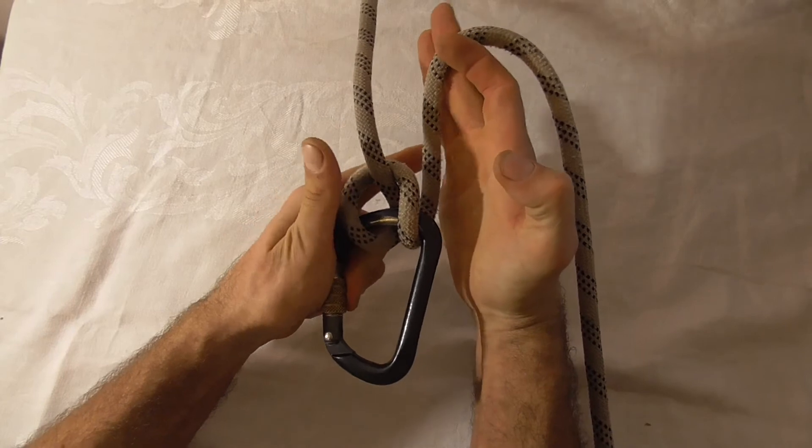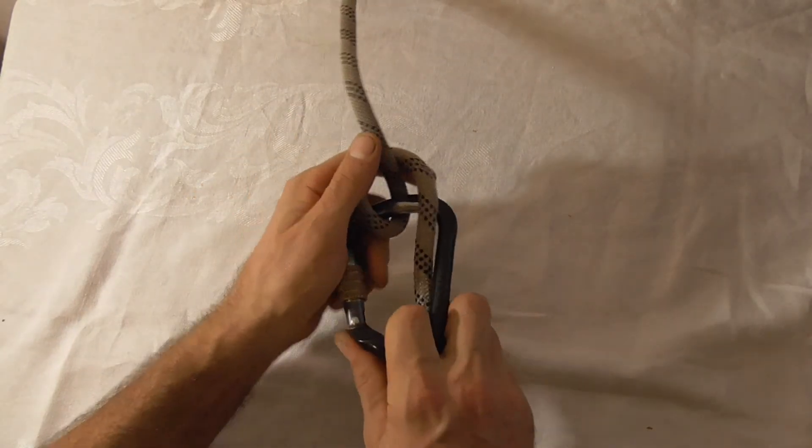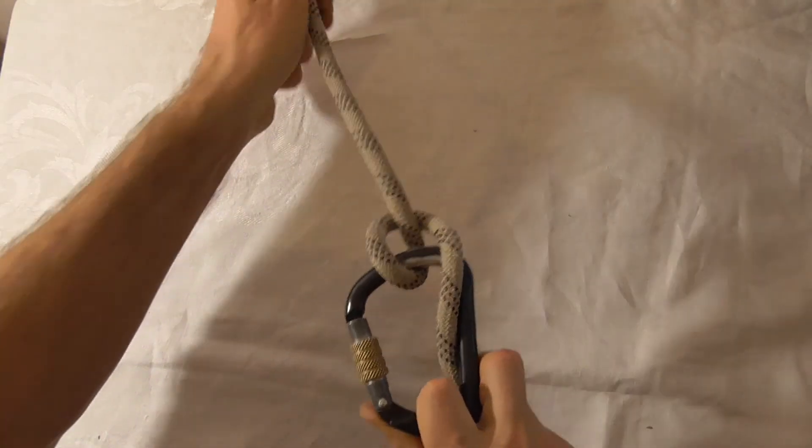Up is full brake and down is to release the friction and allow the rope to slide through the carabiner.